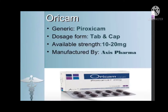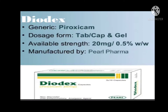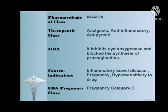The third brand is Diodex, obviously having the same generic name, piroxicam. It is also available in tablet, capsule, and gel preparation, with available strength of 20 mg and 0.5% w/w, manufactured by Per Pharma.